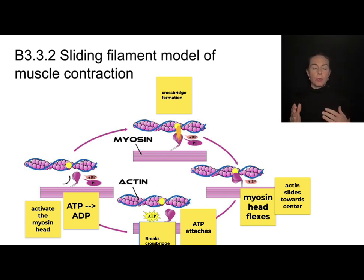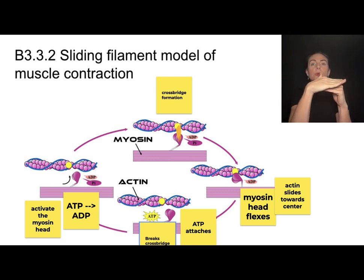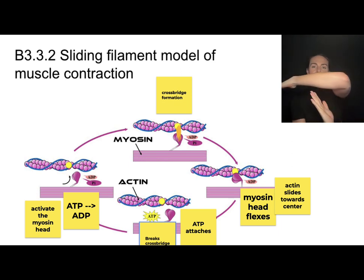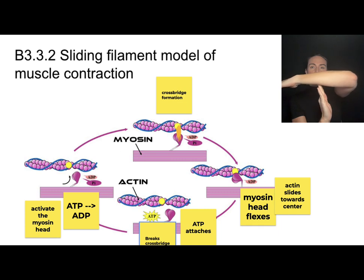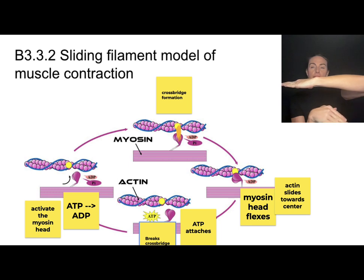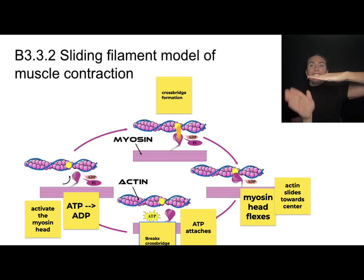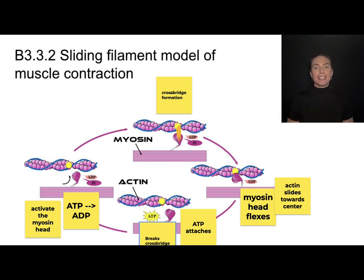Quick summary of the contraction cycle: the whole goal is to get actin to slide toward the center of the sarcomere. ATP hydrolysis → myosin head activation → cross bridge formation → flexion. Then attach new ATP → break the cross bridge → reattach → flex → break → reattach and flex, so on and so forth, until the actin slides all the way toward the center of the sarcomere.